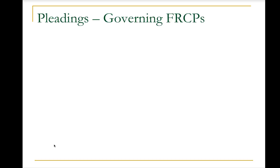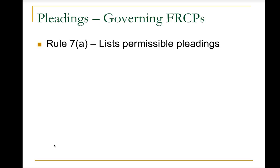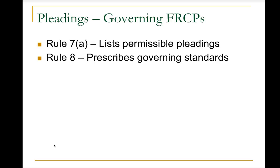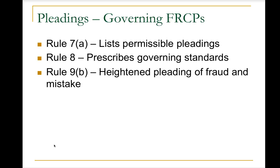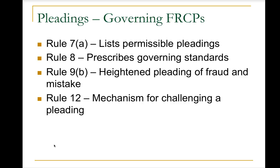First is Rule 7a, which lists what types of pleadings are allowed. Rule 8 prescribes the governing standards — we've looked in some detail already at Rule 8a, and there are also other provisions of Rule 8 that govern the content of other types of pleadings including the answer. Rule 9 governs pleading special matters, and in particular we'll focus on Rule 9b pertaining to allegations of fraud or mistake, which must be pleaded with particularity.